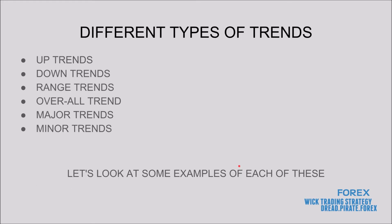The different types of trends you're going to see are: uptrends, downtrends, range trends, the overall trend, major trends, and minor trends. Let's look at some examples of these.